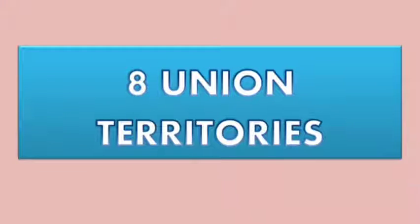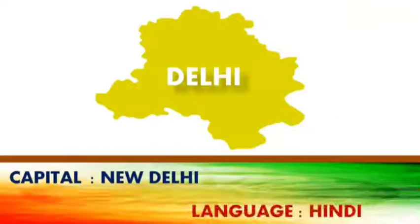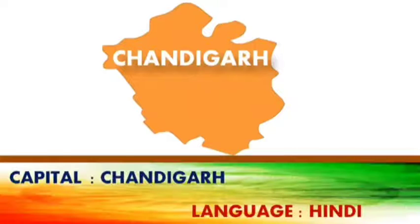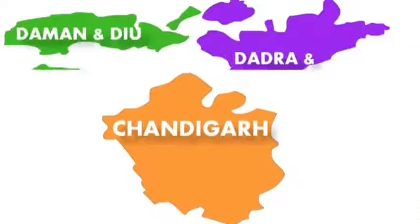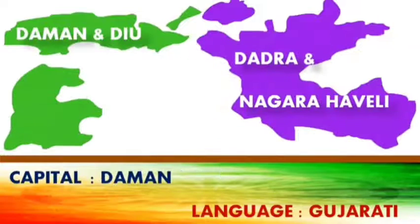Eight Union Territories, let us know. Delhi, capital New Delhi, same itself, language Hindi. Chandigarh, capital Chandigarh, same itself, language Hindi. Daman and Diu, Dadra and Nagar Haveli, capital Daman, language Gujarati.